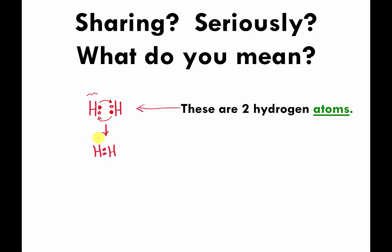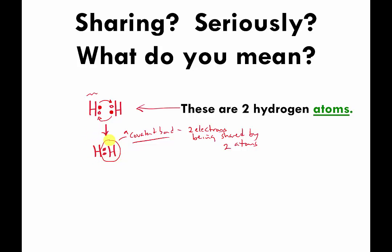Those two hydrogen atoms share their electrons constantly, so the two atoms are now stuck to each other. This type of sticking together is called a covalent bond. Technically, a covalent bond is two electrons being shared by two atoms — that is our definition. The hydrogen on the left now at least part of the time has a completely filled first energy level, so it's more stable. The same is true for the hydrogen on the right.